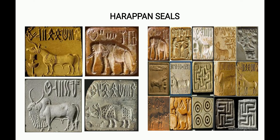Thousands of seals have been found from the Indus Valley sites. Most of them have short inscriptions with pictures of one-horned rhinoceros, gods, elephants, buffaloes, and crocodiles. The seals were probably used for stamping by people in authority. Some seals were also used as ornaments, popularly known as amulets.